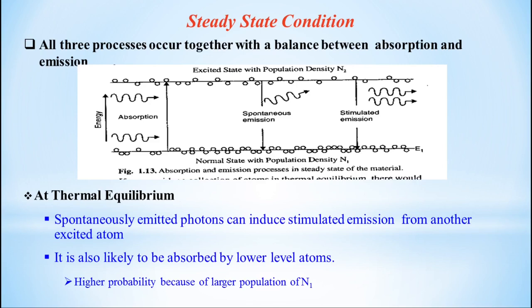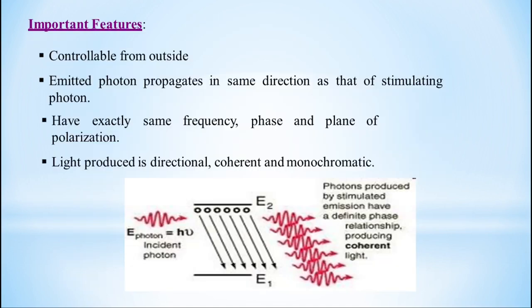Population density of excited state is N2. Excited state means the energy state which is having energy greater than energy of ground state. This picture depicts all the three processes. Important features of stimulated emission: it is controllable from outside. The emitted photon propagates in the same direction as that of the stimulating photon, as shown in this diagram.